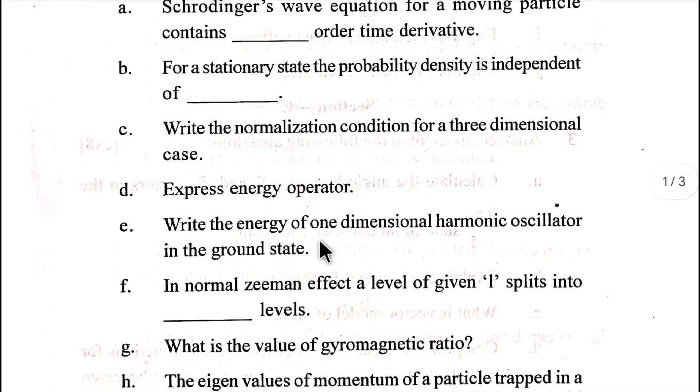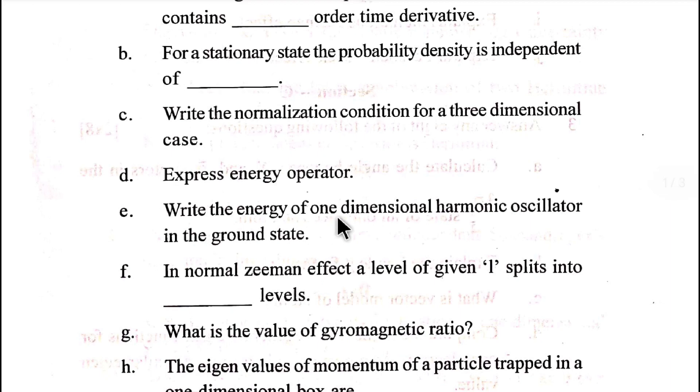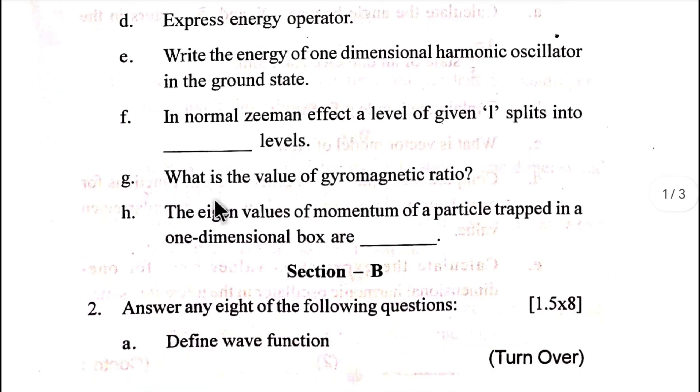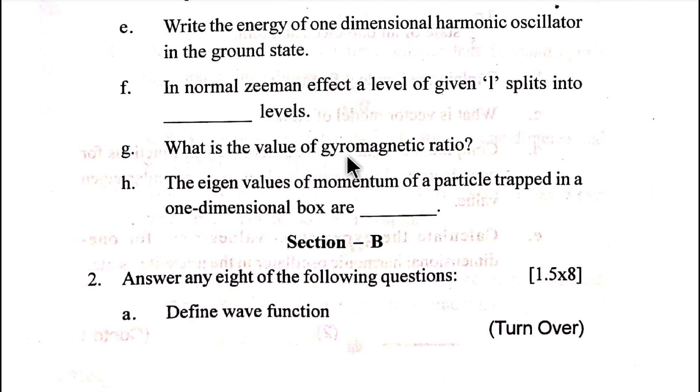Express energy operator. Write the energy of one-dimensional harmonic oscillator in the ground state. In normal Zeeman effect, a level of given L splits into dash levels. Now, what is the value of gyromagnetic ratio?